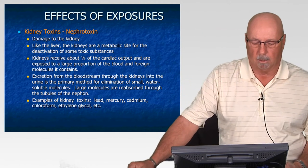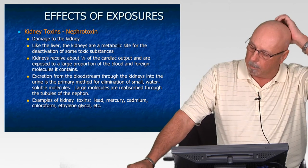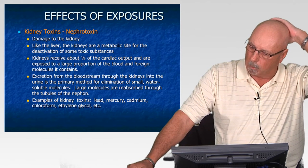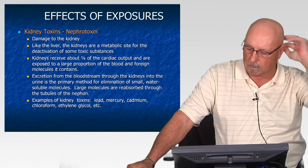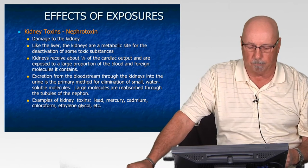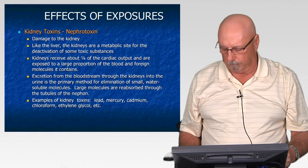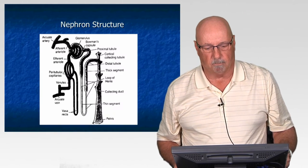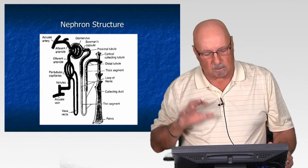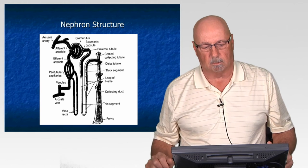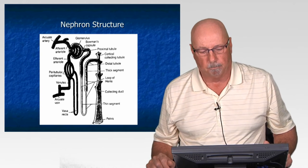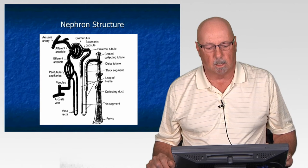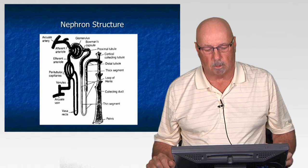Common compounds documented as kidney nephrotoxins include lead, mercury, cadmium, chloroform, and ethylene glycol, just to name a few. A cross-sectional diagram of the kidney nephron structure illustrates the various sections where compounds travel through during passage through the blood system.